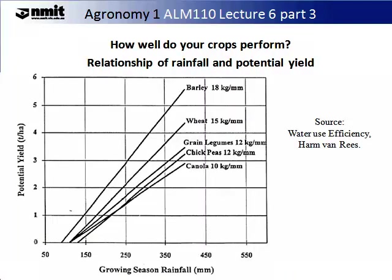This is a very useful format to compare — we call this benchmarking. As mentioned in one of the first lectures on climate and agronomy, rainfall is an absolutely essential component to the successful growing of cereal crops in Australia. The following graph shows the relationship between potential yield in tonnes per hectare and the growing season rainfall. There is quite a linear relationship between rainfall and yield potential. The graph shows these relationships for barley, wheat, grain legumes, chickpeas and canola, with the optimal cropping load ranging from 10 kg to 18 kg per millimetre of rain.